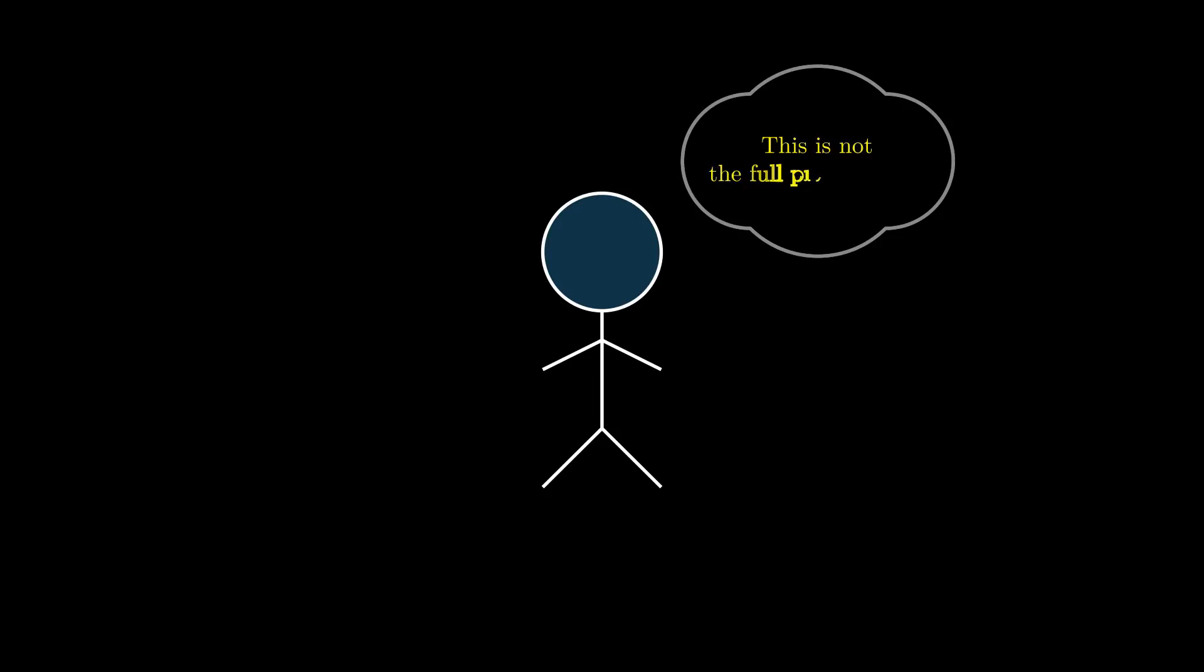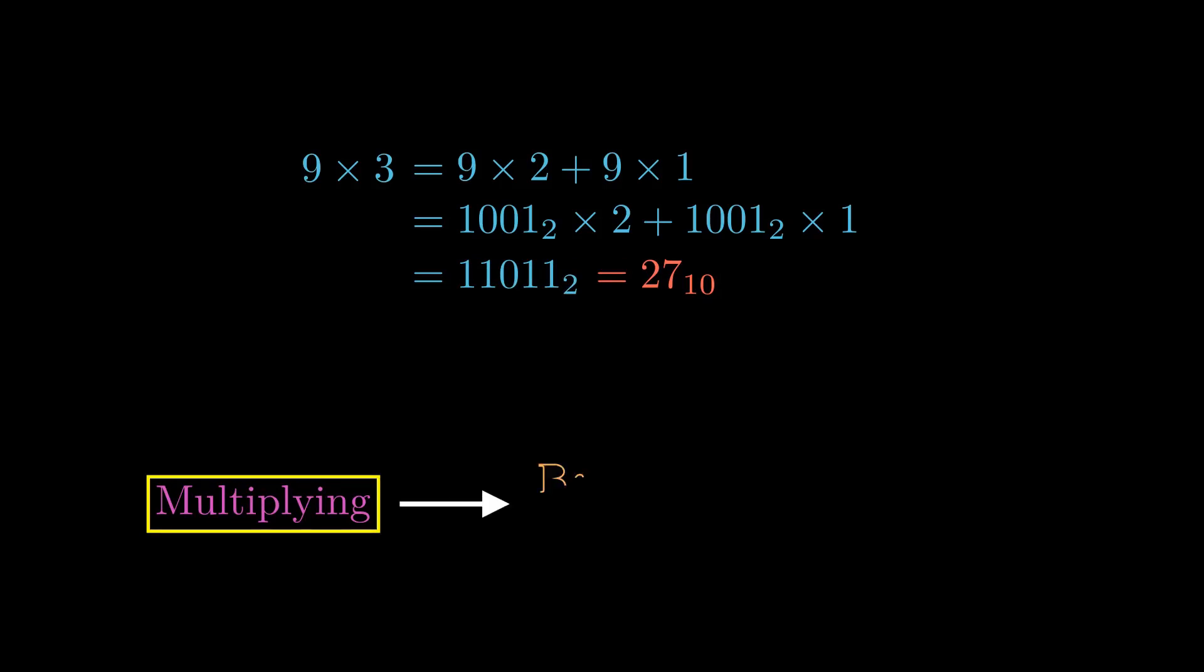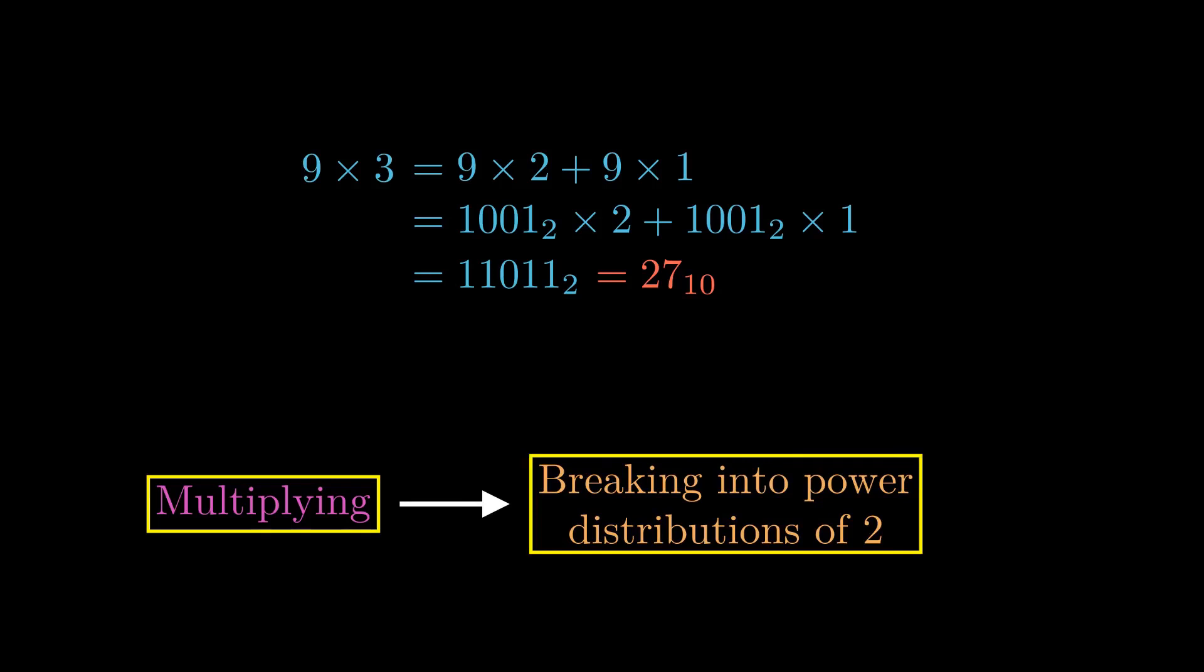Now you might ask what is equivalent of multiplying by a number that is not the power of 2. So what is multiplying by 3 equivalent to? Multiplying by 3 can be obtained by multiplying the number by 2 and adding the number itself. 9 into 3 for example equals 9 into 2 plus 9 into 1. 9 in binary number is 1001 and multiplying by 2 is adding 10 at the end which is 10010. Add that number to itself 1001 and the answer is 11011. That in decimal number system is 27 and it is therefore possible to multiply any number in binary just by breaking the number down into power distributions of 2.